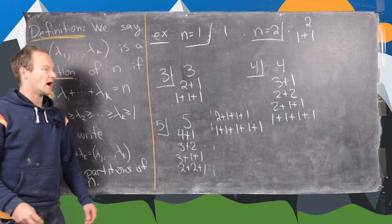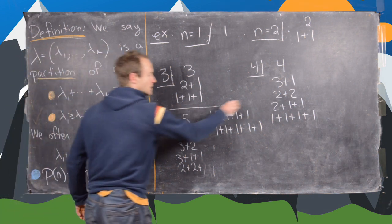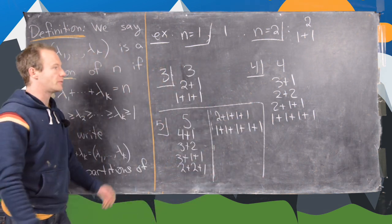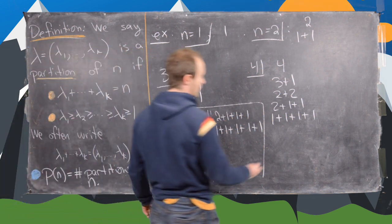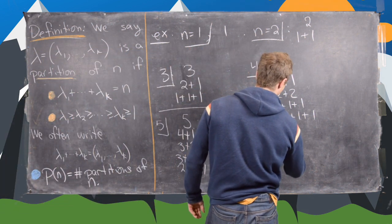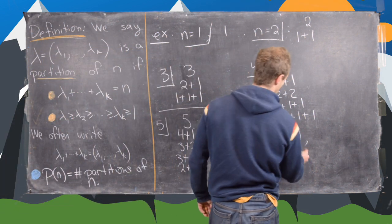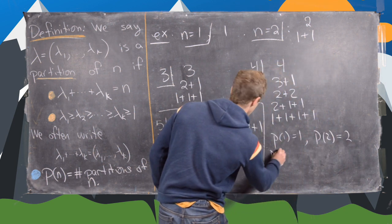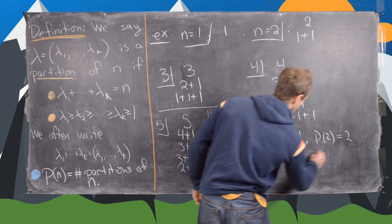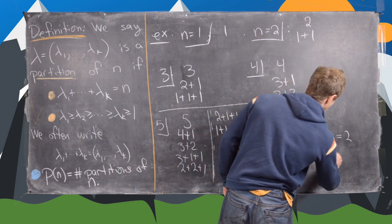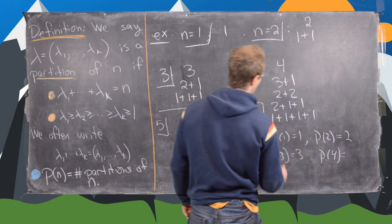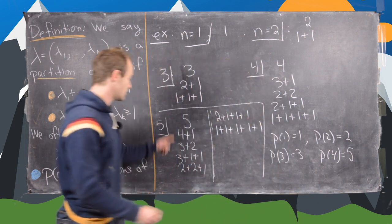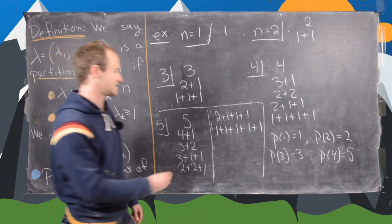From this exploration we now know p of n for the first few values: p of 1 equals 1, p of 2 equals 2, p of 3 equals 3, p of 4 equals 5, and p of 5 equals 7.